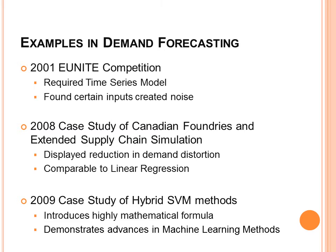However, in 2008, there was a case study involving Canadian foundries and a simulated extended supply chain that showed support vector machines perform really well when trying to forecast demand. This case study used all known traditional forms — such as naive, time series, and moving average — and compared them to neural networks and support vector machines. Support vector machines performed really well, but were pretty comparable to what you could get through a time series analysis. The mean average error was very closely related to what traditional forecasting methods produced at that time.